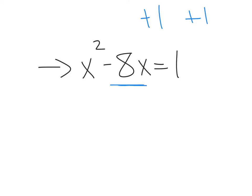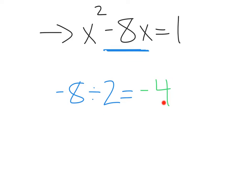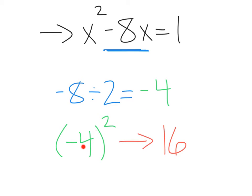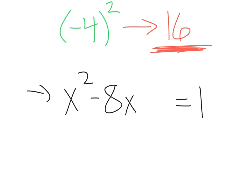Next, whatever your coefficient of x is — in this case negative 8 — we want to split that in half. That'll be negative 8 divided by 2, which is negative 4. Then we square this term: negative 4 squared, negative 4 times negative 4, which is 16. From here we take this 16 and add it back to both sides of our equation, just like this. We get x squared minus 8x plus 16, and whatever we do to one side we've got to keep it balanced.